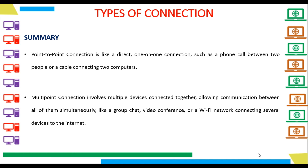In summary, a Point-to-Point Connection is like a direct, one-on-one connection, such as a phone call between two people or a cable connecting two computers. On the other hand, a Multipoint Connection involves multiple devices connected together, allowing communication between all of them simultaneously, like a group chat, video conference, or a Wi-Fi network connecting several devices to the internet. So this was all about Point-to-Point and Multipoint Connections.